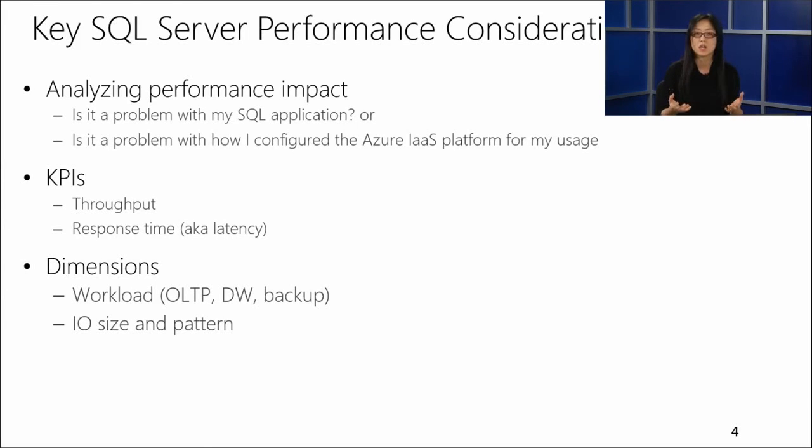We see two things come to mind: throughput and latency. In the context of your workloads, that translates to what response time your users observe. There are multiple dimensions — for instance, you would have OLTP workloads, which are typically 8K in size with random reads or writes. There are also data warehousing workloads, which are much bigger in size and mostly sequential, and backup workloads and how they behave in this new environment.